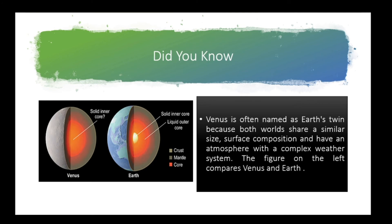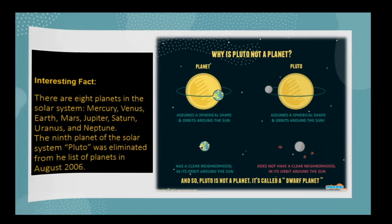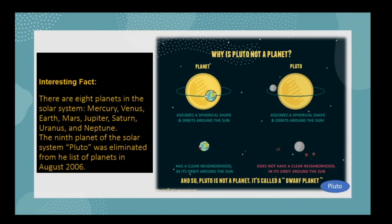So students, let's survey another interesting fact. There are eight planets in the solar system: Mercury, Venus, Earth, Mars, Jupiter, Saturn, Uranus, and Neptune. The ninth planet of the solar system, Pluto, was eliminated from the list of the planets in August 2006.